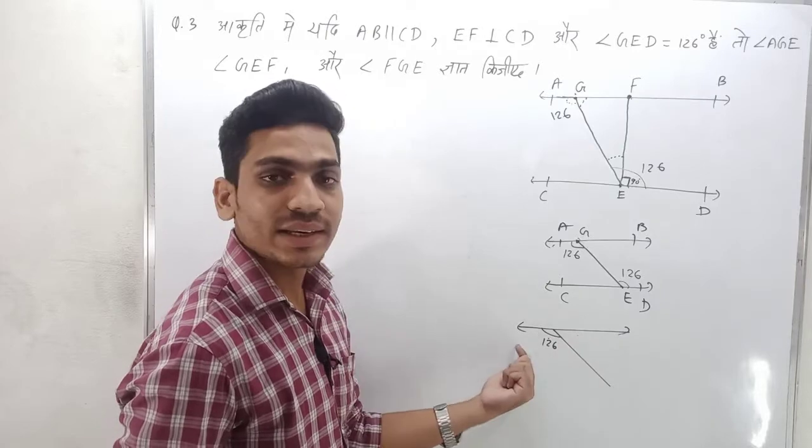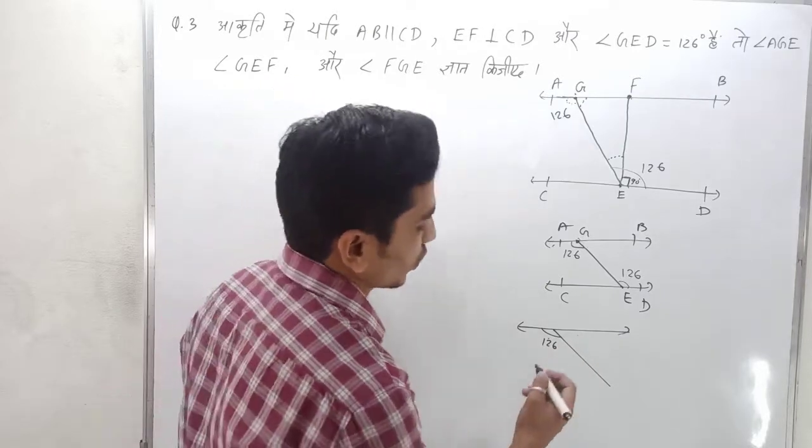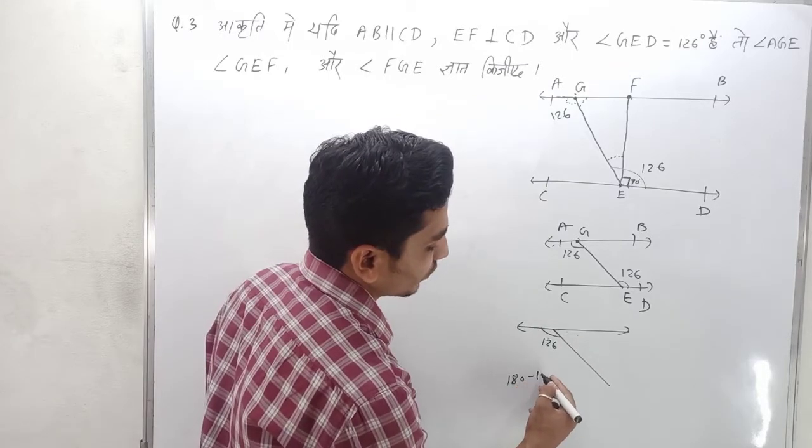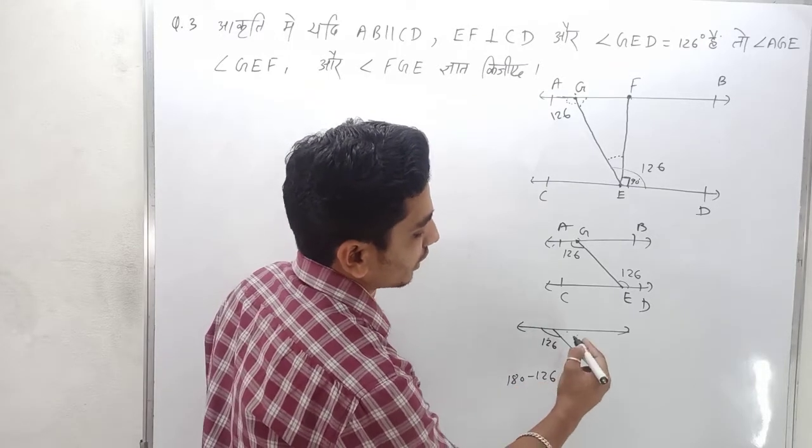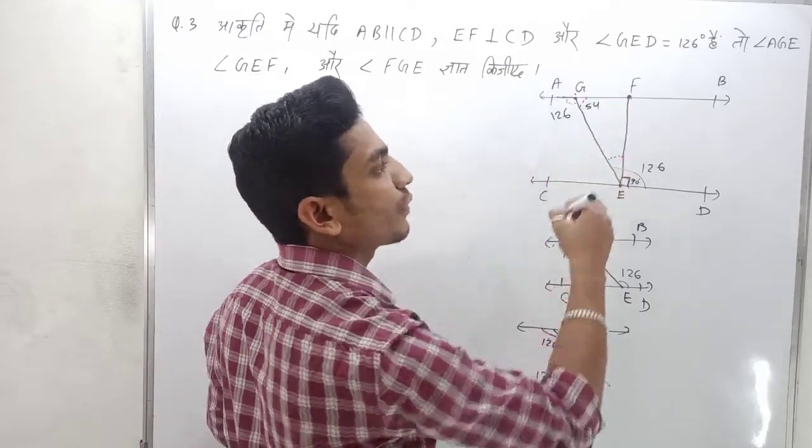This is 180 degrees because this is a linear pair. From 126, the other angle is 54 degrees.